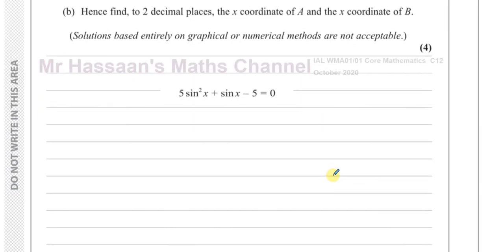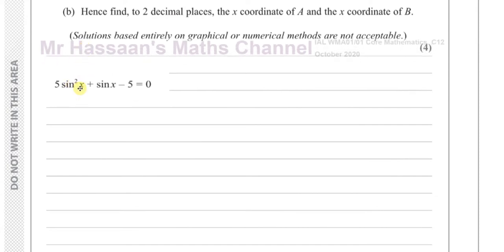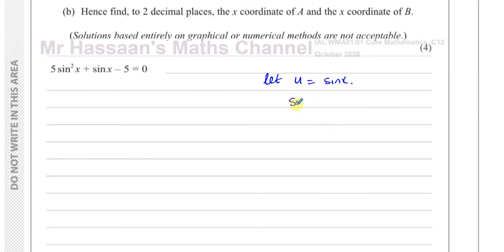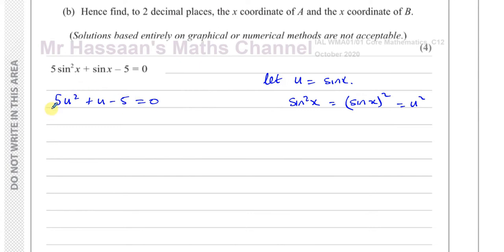This is like a quadratic equation. To make it more familiar, let U = sin x. Since sin²x means (sin x)², that becomes U². So the equation becomes 5U² + U − 5 = 0. To factorize, we'd need two numbers that multiply to −25 and add to +1. That's not possible — so we're going to use the quadratic formula.